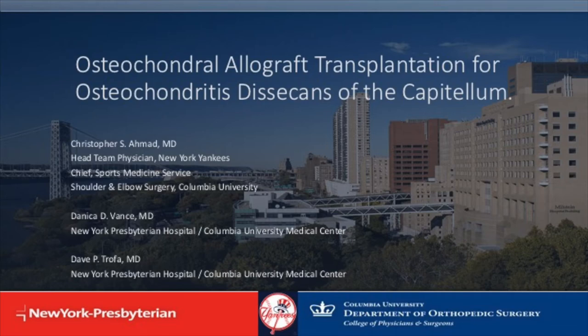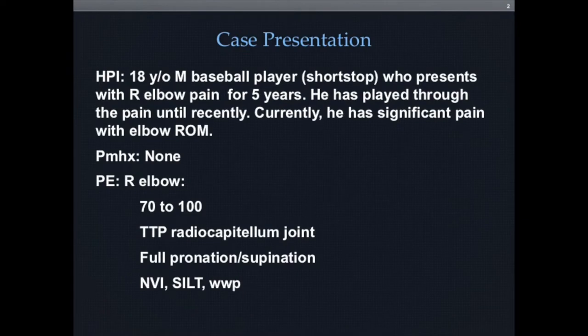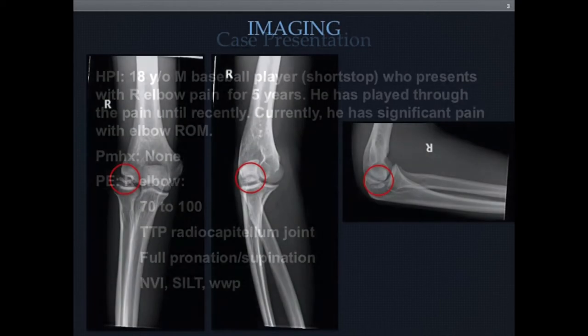This case will illustrate osteochondral allograft transplantation to the capitellum. The patient is an 18-year-old baseball player, shortstop, who has had a long history of elbow pain, with a significant increase in pain and decrease in range of motion, along with tenderness over the radiocapitellar joint.